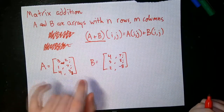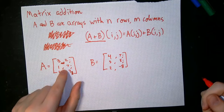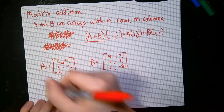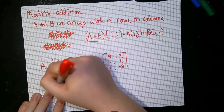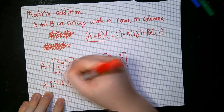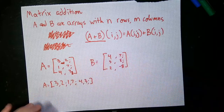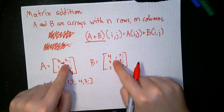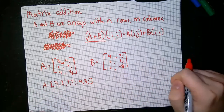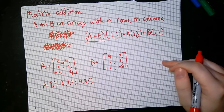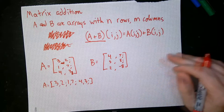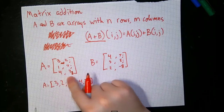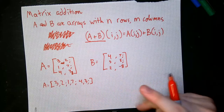Here are two example matrices. Normally you wouldn't see these in actual matrix formatting, but I tried to put commas and semicolons where you would normally see them in MATLAB. So defining A, you would do A equals 3, 2, semicolon, 1, 7, semicolon, 4, 3 — and similarly for B. I wanted to make that correlation between what it looks like in MATLAB versus this matrix form.